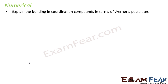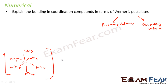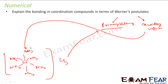Now we will start with the numericals. The first question says: explain the bonding in coordination compounds in terms of Werner's theory. We have discussed this — Werner proposed two types of valency: primary valency and secondary valency. The secondary valency is used to bind the ligands, such as NH₃ and CO. Primary valency gives the oxidation state of the compound, and secondary valency relates to the coordination number.